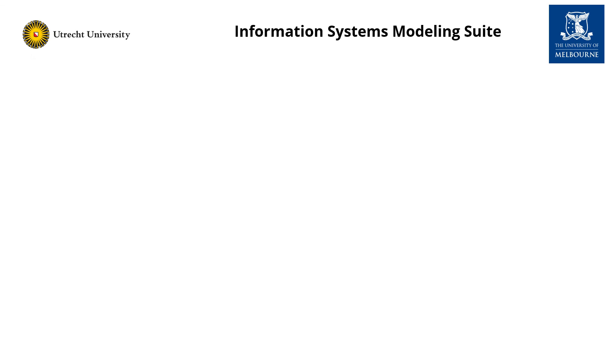In this presentation, I have introduced you to the information systems modeling suite. The tool combines Petri nets on the one hand, and information models in the form of sets and first order logic constraints on the other hand. In this way, we want to combine the strengths of both fields to design and analyze information systems, and study the interplay between information and processes. Future work includes adding visual modeling support to define the actual information model, as it now is a manual and thus error-prone task. We want to develop new design strategies and methods to further support the modeler in the task of specifying information systems.